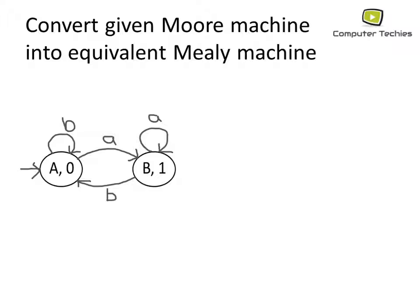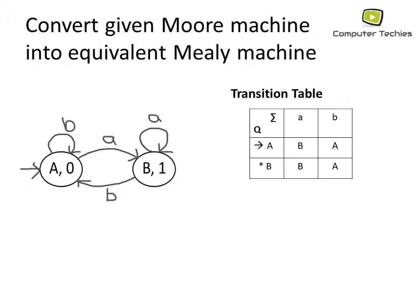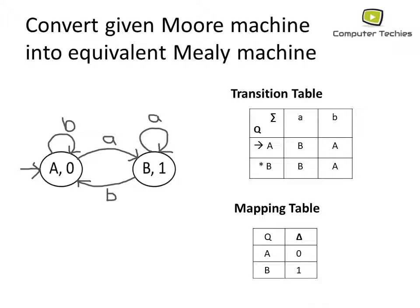First, let's follow the steps. We draw the transition table with Q and Σ. On state A, if input a is applied we get to state B. On state A, if input b is applied we get to state A. This is the transition table.